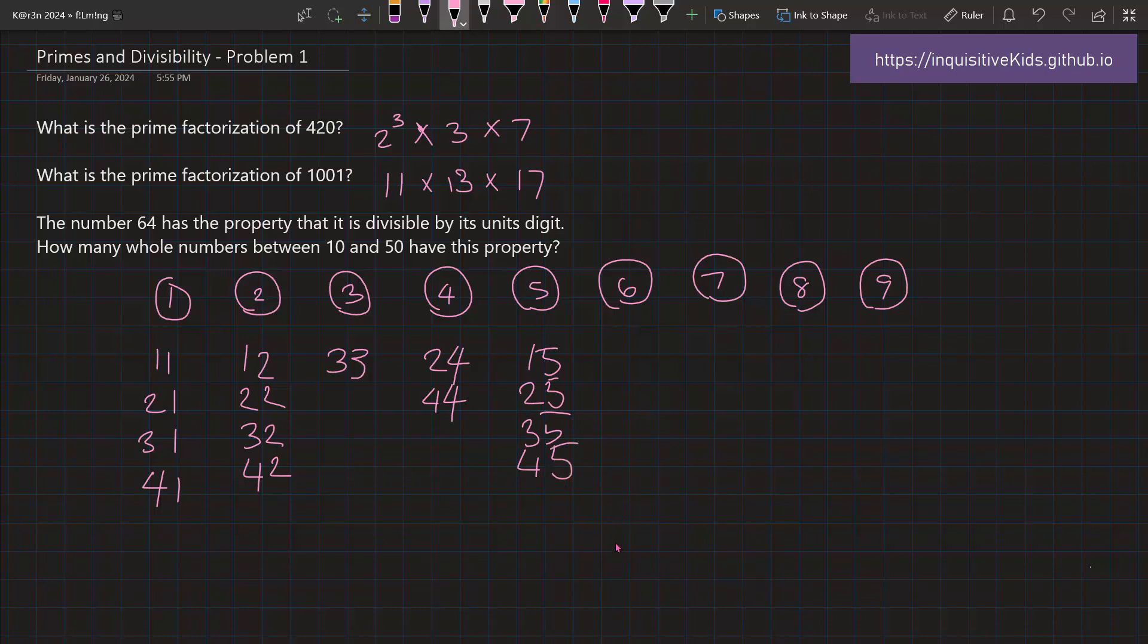Now for 6. There's 16, 26, 36, and 46. Out of them, 36 is the only one. None of the numbers that end in 7 is divisible by 7.